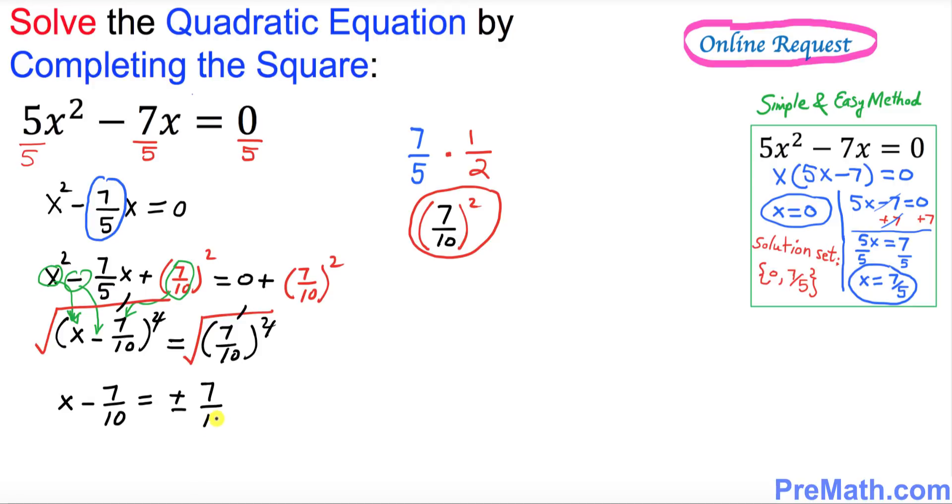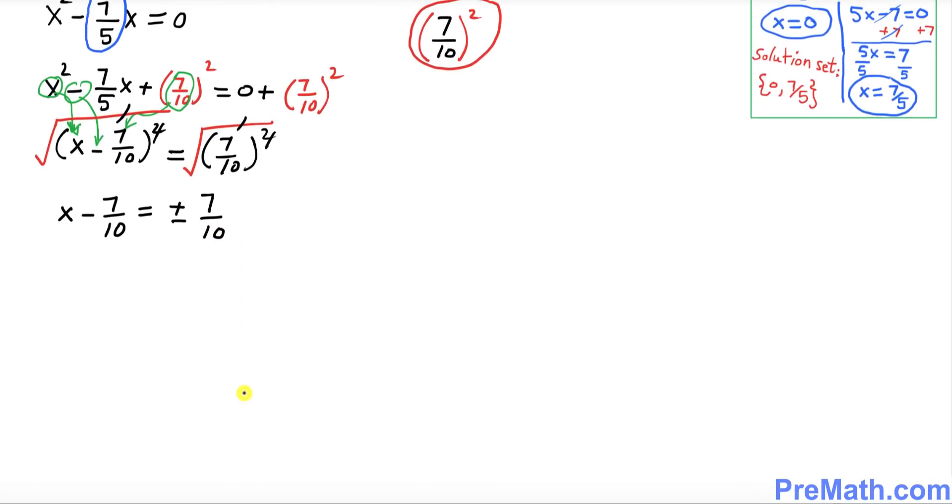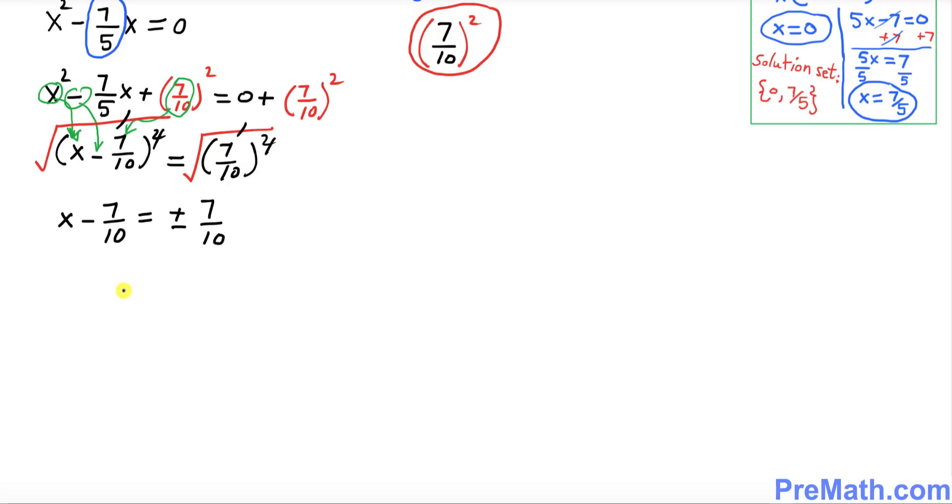So far so good. Now I want you to move this negative 7/10 on the other side because we want to isolate x. So x equals this negative 7/10, when you move it on the other side, will become positive 7/10 plus or minus 7/10.